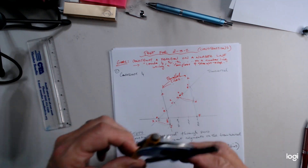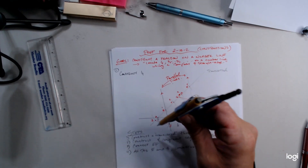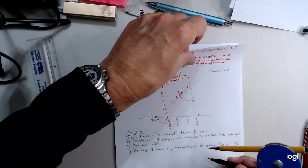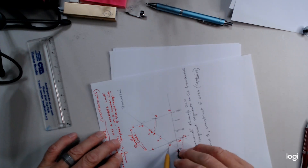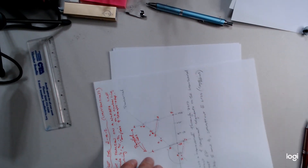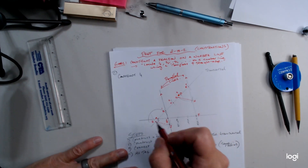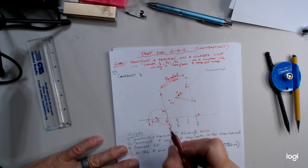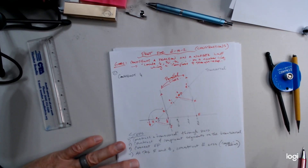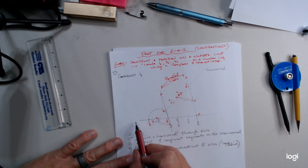There are also other fractions you can find from this construction. If you know where 1/4 is, you can go the other direction — measure 1/4, readjust, and go on the other side of 0. If you're 1/4 on the other side of 0, you're at negative 1/4. Once you locate 2/4, you know where negative 2/4 is. Once you locate 3/4, you know where negative 3/4 is.